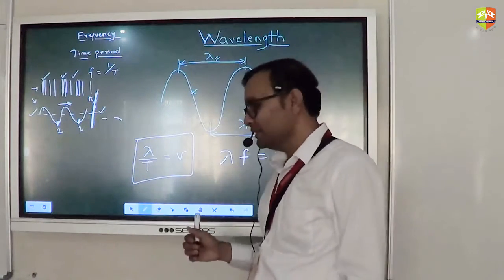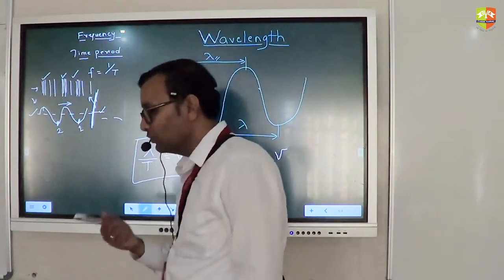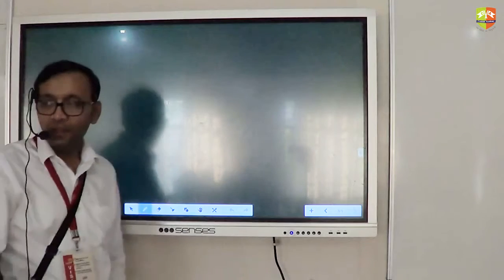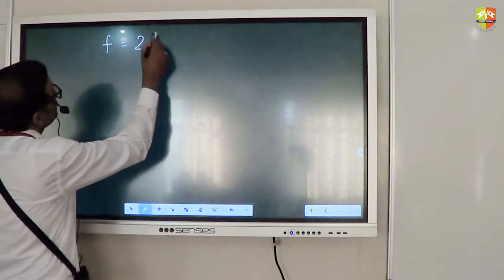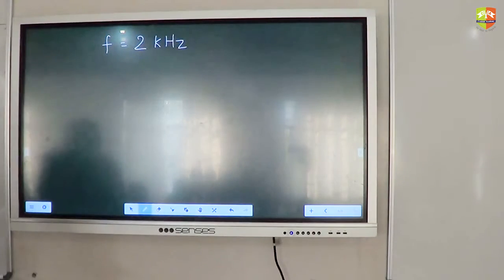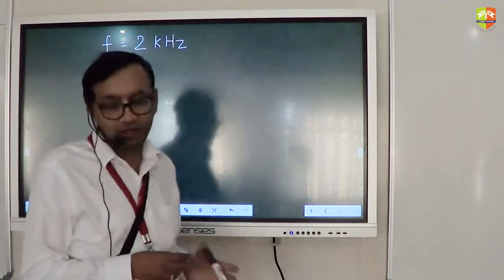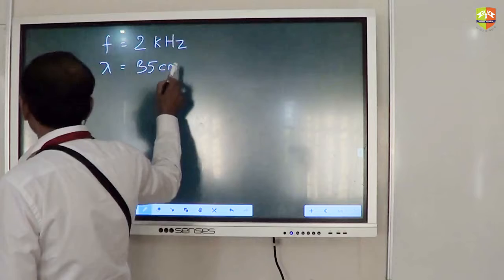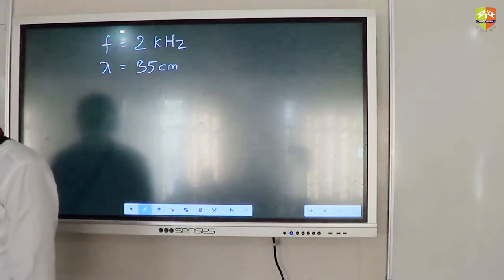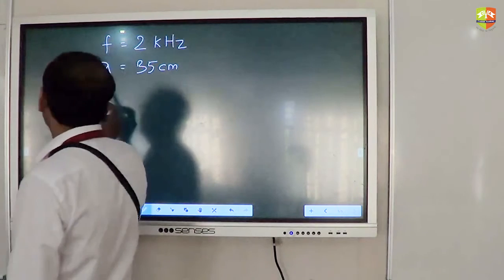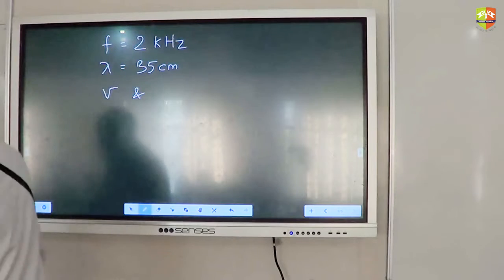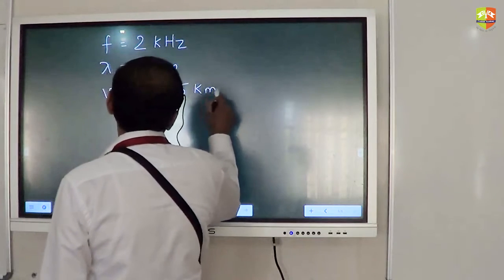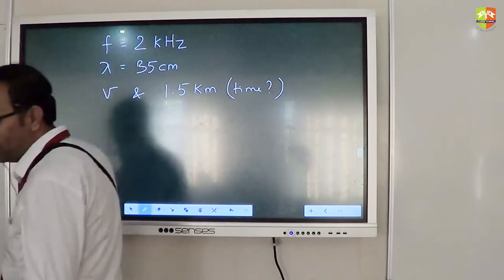So let's solve one or two questions. I have also brought with me a worksheet. Right now, you might have done this in school also, but the purpose is not to get the answer. Purpose is, whatever you have just learned, try using it so that it is clear. The sound wave of frequency 2 kilohertz and wavelength 35 centimeter. You find out velocity and you need to find out how much time it will take to travel 1.5 kilometer.